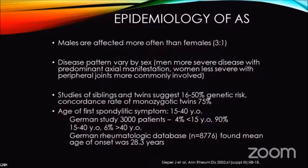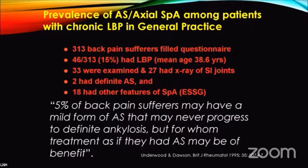Epidemiology is also interesting. Males are affected three times more than females, and the disease is more severe in males who also have more axial symptoms. Siblings and twins show a 16 to 50% incidence, and the average age of onset is 15 to 40, with a German study putting the mean at 28. About 5% of patients presenting with back pain will have ankylosing spondylitis or some signs of it. We need to follow these patients because even if they don't develop full-fledged ankylosing spondylitis, treating them as if they do makes them clinically better off.